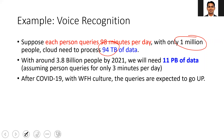Our population is around 3.8 billion on Earth, and if we use only 3 minutes per day, the total amount of data corresponds to 11 petabytes — that's a huge amount of data. With pandemic-driven work-from-home arrangements, the use of such devices and the cloud is going to go up further.